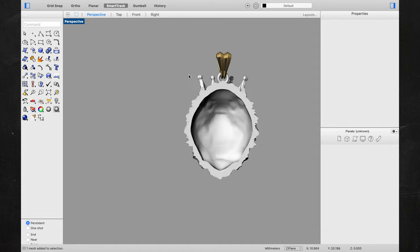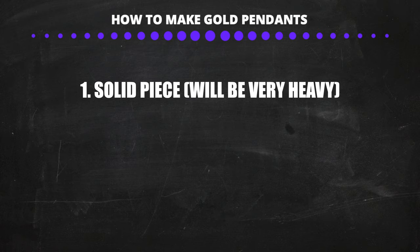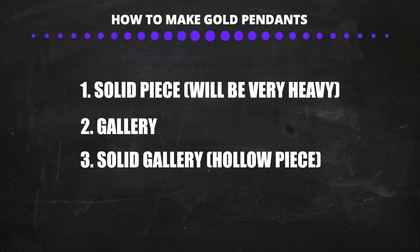We can't make jewelry like this. When you guys are making pendants that are bulky, we have three ways we can make them. The first is fully solid — the problem is the piece is going to be very heavy. The second choice is we can add a gallery. The third choice is we can make a solid gallery, which will make the piece look solid but really it's going to be hollow.